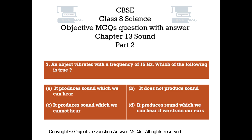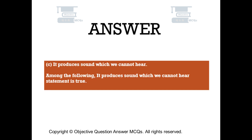Question number 7. An object vibrates with a frequency of 15 hertz. Which of the following is true? Option A: It produces sound which we can hear. Option B: It does not produce sound. Option C: It produces sound which we cannot hear. Option D: It produces sound which we can hear if we strain our ears. The right answer is option C. It produces sound which we cannot hear — this statement is true.